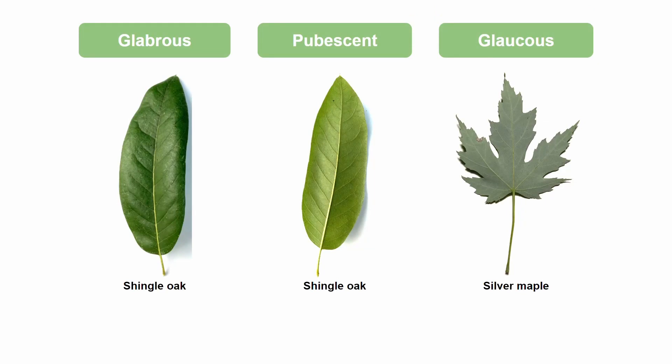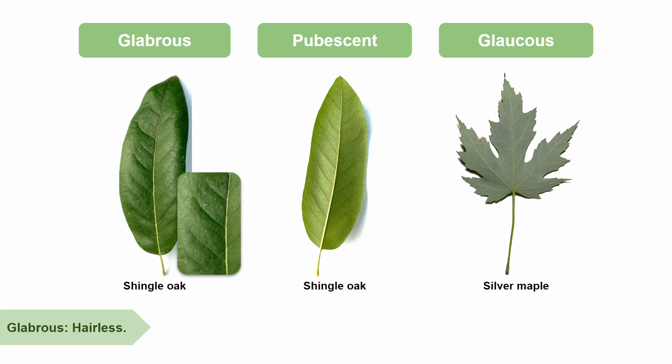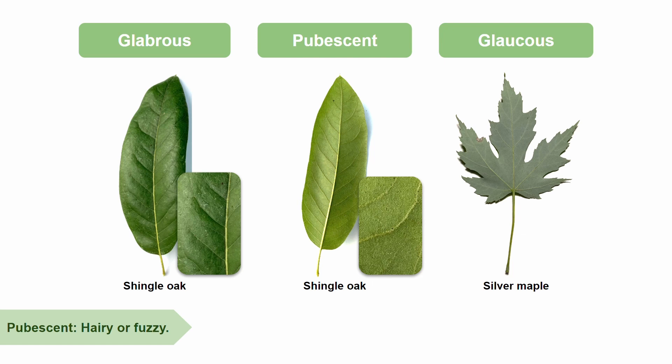As we've seen, there are a lot of small ways to differentiate between leaves. Another way is to see if the leaf is glabrous, glaucous, or pubescent. A glabrous leaf is one that is hairless. An example of a glabrous leaf is the top of our friend shingle oak. However, interestingly enough, the bottom of a shingle oak leaf is pubescent, which means that it is hairy or fuzzy.